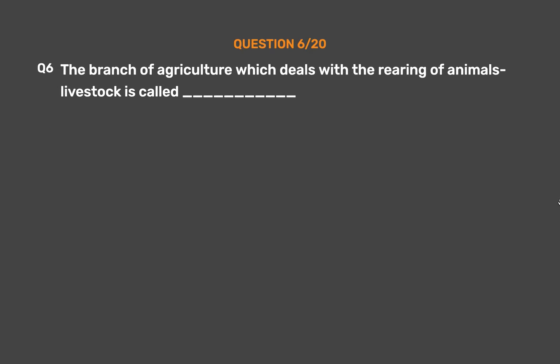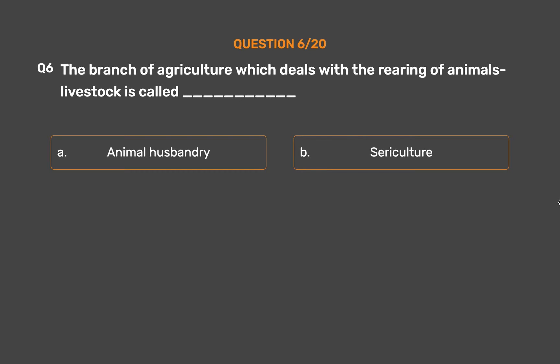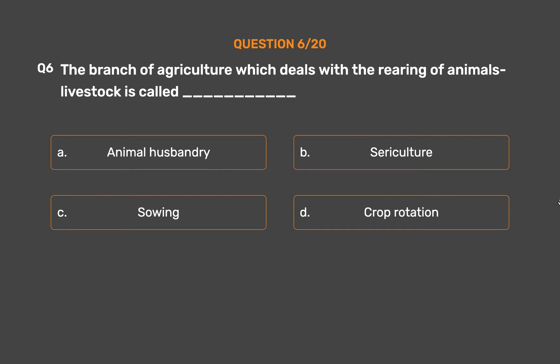Question No. 6: The branch of agriculture which deals with the rearing of animals' livestock is called ___. Option A: Animal husbandry. Option B: Sericulture. Option C: Sewing. Option D: Crop rotation.